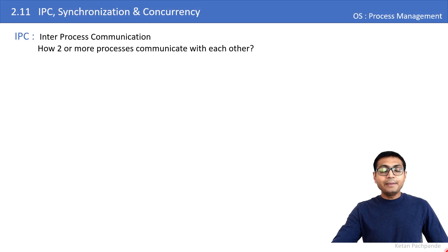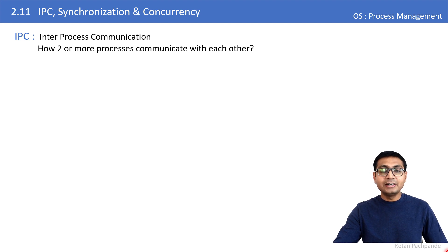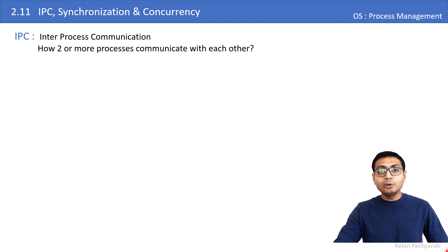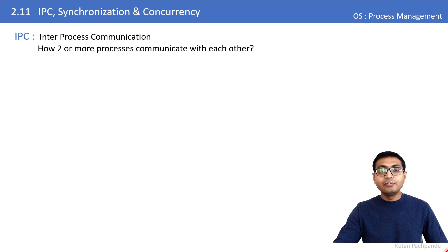IPC stands for inter-process communication — how a process sends, receives, or shares data with another process. In contrast, intra-process communication is when two or more threads within a process want to share data.